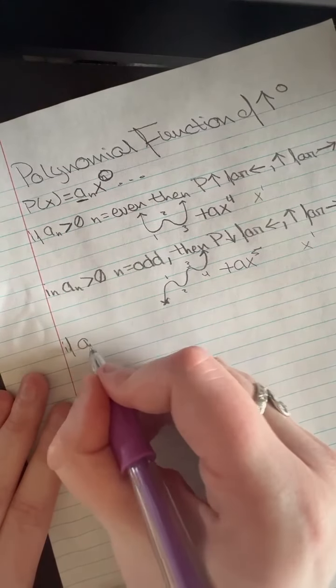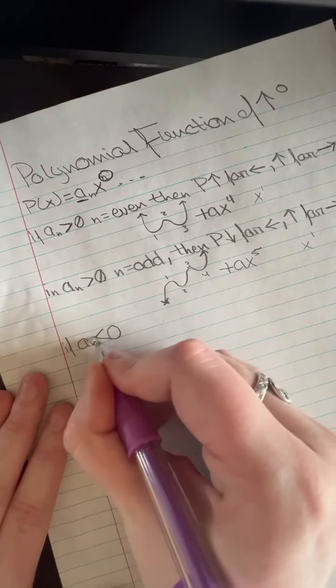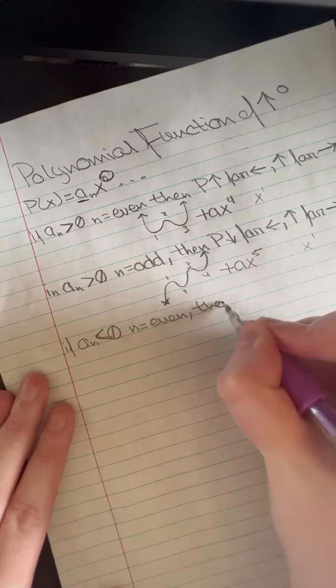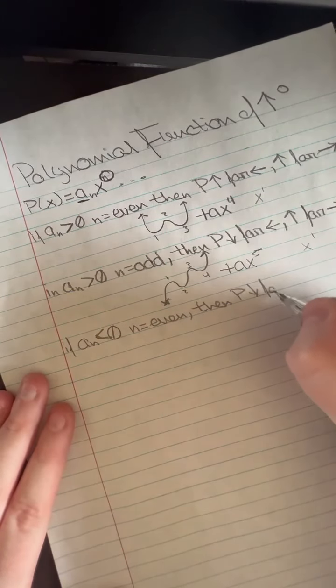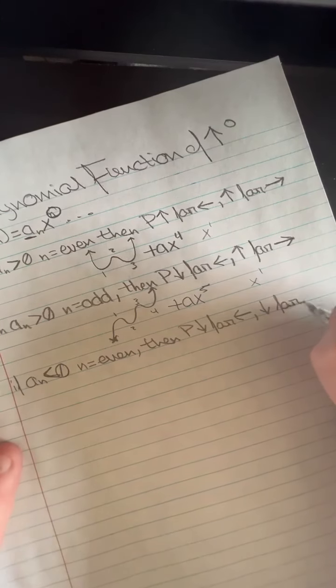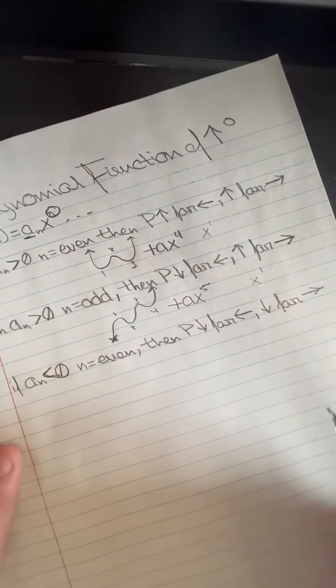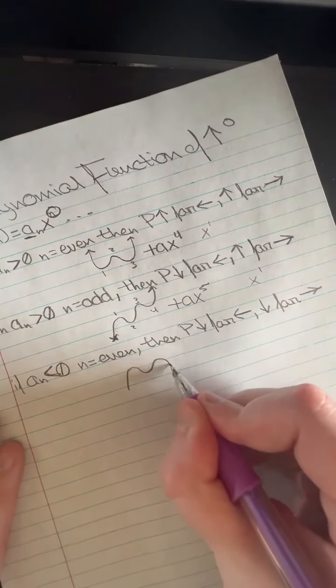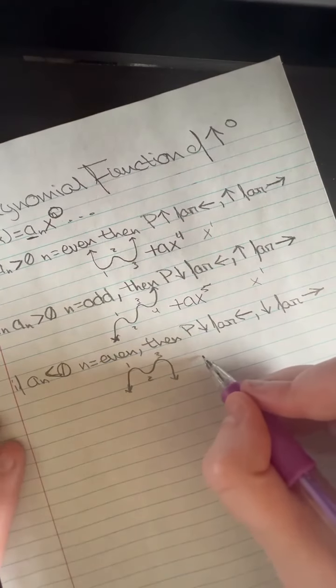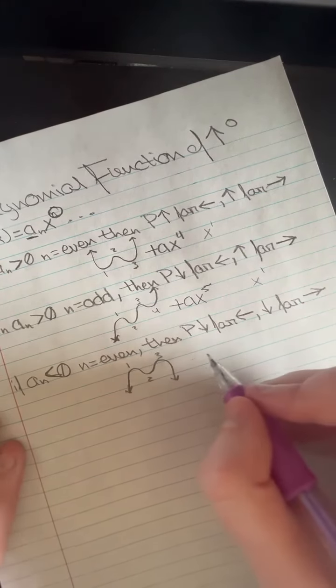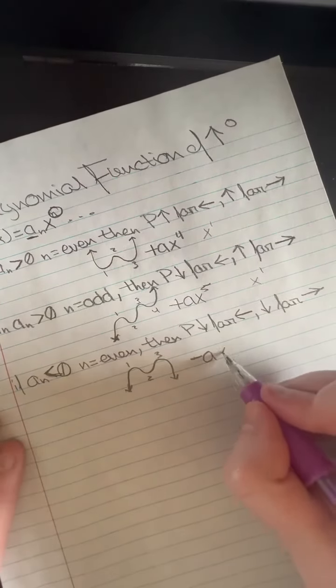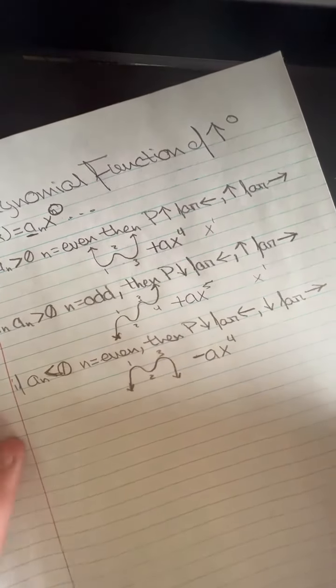If a is less than 0 but n is an even number, then p would go down to the far left and down to the far right, which would look opposite of this one. So it would look like this. We have an exponent of 1, so 1, 2, 3 turns. We would have a negative a since it is less than 0, but our x would have an even exponent of 4.